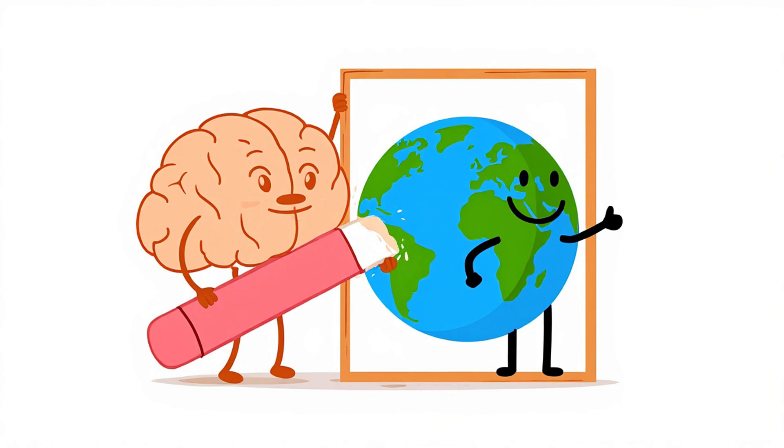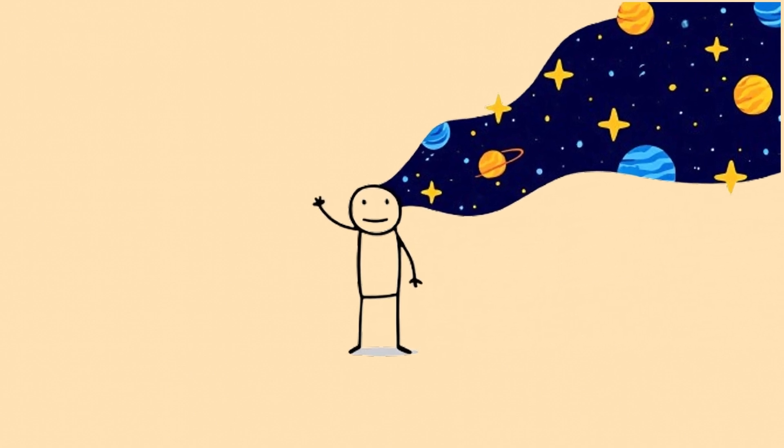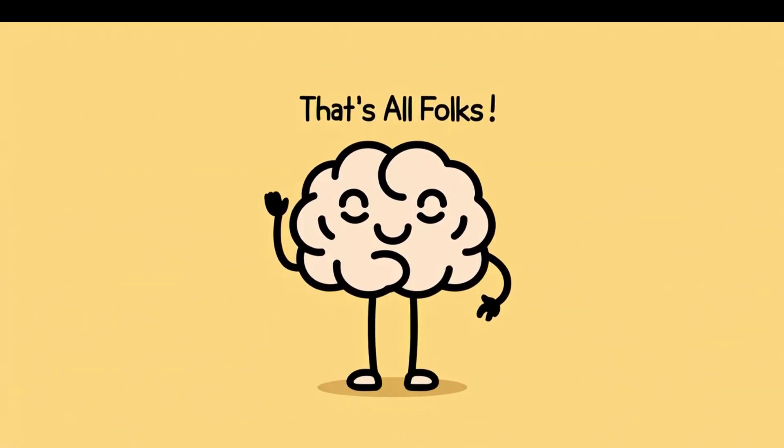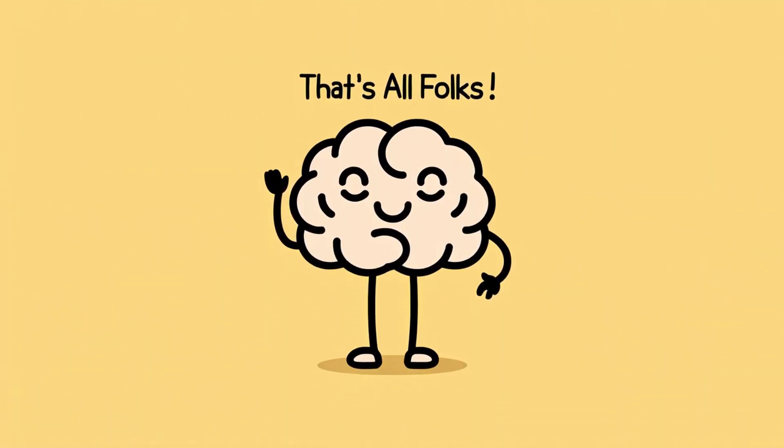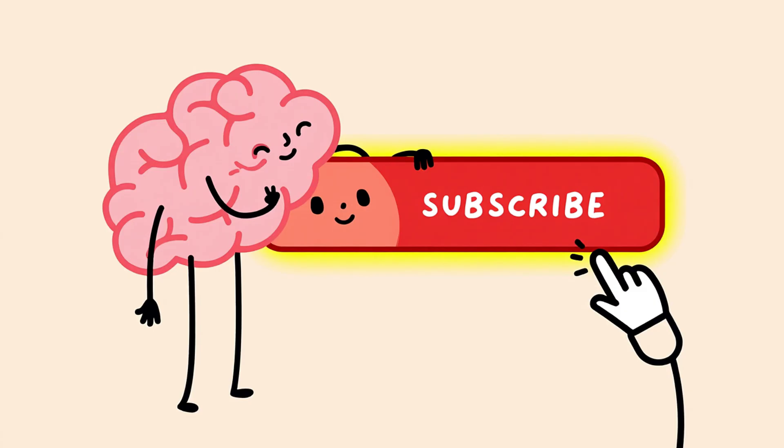So yes, your brain can literally erase half of reality from your awareness and make you feel totally fine about it. You can see the world, but if your brain decides not to acknowledge part of it, then welcome to the half-universe. That's it for today. More mind-bending brain glitches coming soon in future videos. Hit subscribe if you want to keep exploring the ways your brain quietly rewrites your reality and never tells you.